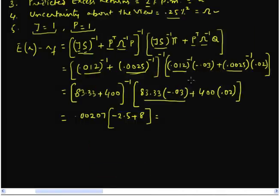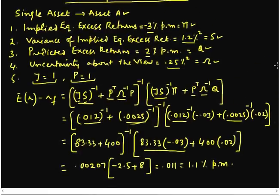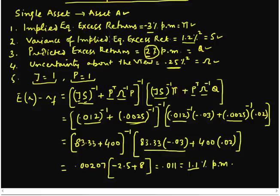So we write 0.011, or roughly 1.1% per month. This is the estimate of our expected returns when we use the Black-Litterman formula for this case. The excess return is getting pulled towards our prediction. Our prediction is that this asset would be earning 2% per month, whereas the implied equilibrium excess returns were minus 3% per month. Our result is getting closer to our prediction. We are quite confident about our prediction relative to the market — the uncertainty about our views is 0.25% squared, whereas the variance in the implied equilibrium excess return is much greater, 1.2%.